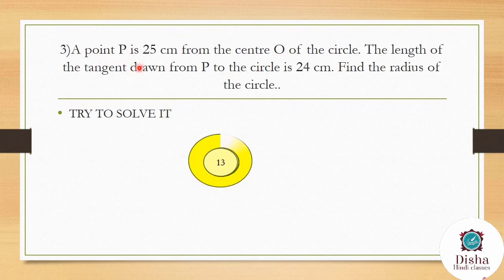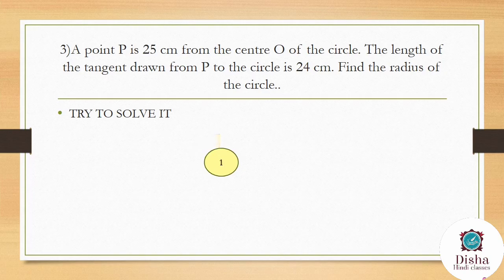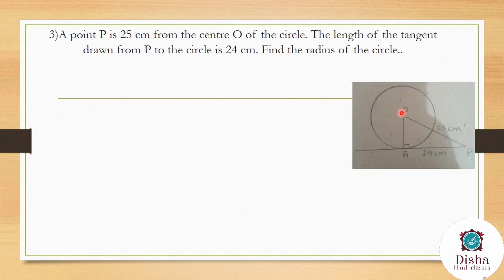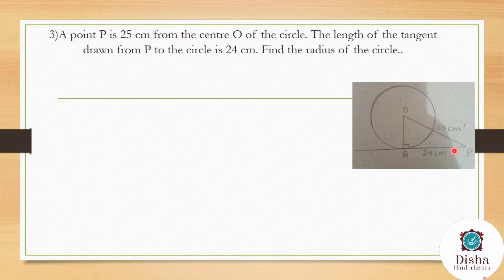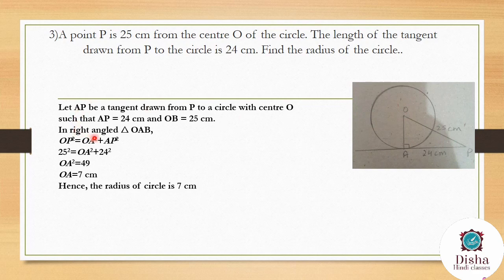Point P is 25 cm from the center O of a circle. The length of the tangent drawn from P to the circle is 24 cm. Find the radius. Using Pythagoras theorem: OP² = OA² + AP², so OA² = 25² − 24² = 625 − 576 = 49, giving OA = 7 cm. Hence the radius of the circle is 7 cm.